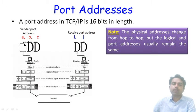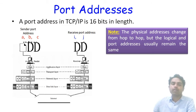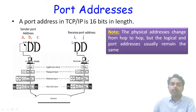The third type is port addresses. A port address in TCP/IP is 16 bits in length. In this example, the sender is running multiple processes: A might be sending mail, B might be file transfer, and C might be web browsing. We consider process A — sending a mail. The receiver is running two processes: I for file transfer and J for receiving mail. In this example, A (sender) is sending mail and J (receiver) is receiving mail. A is the sender port address and J is the receiver port address.